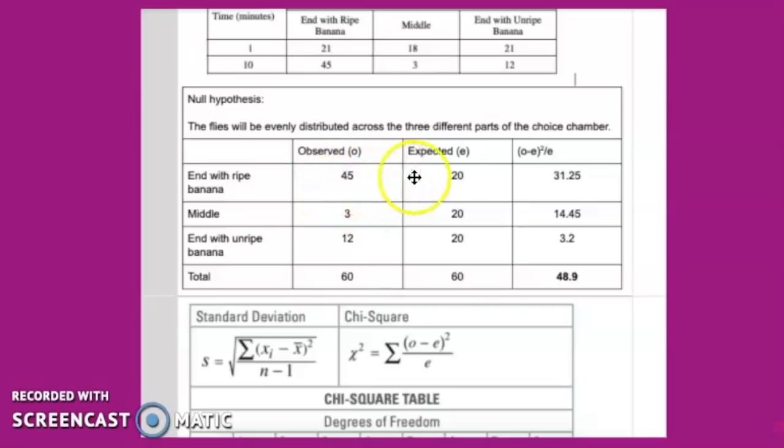Our observed values are a little bit different. We see the end with the unripe banana had 45 at 10 minutes, had three flies in the middle at the end of the experiment, and 12 flies towards the side with the unripe banana. Now this should also total up to 60. What we're going to do now is plug in our values. We take the observed number, which is 45, subtract the expected, 20, square that value, and then divide it by the expected, divide it by 20. The value we would get from that is 31.25. We would do that again for the middle condition and then the unripe condition.